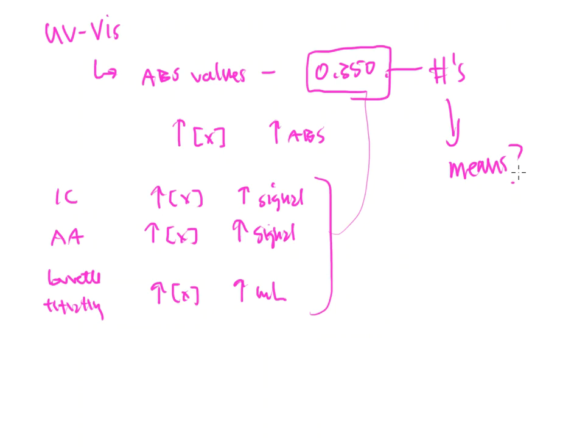And in order to do that, you have to make a calibration curve. So what really does that mean? How do I make a calibration curve? Well, I make a set of standards. Typically, you always need three standards. That's minimum. Minimum of three.